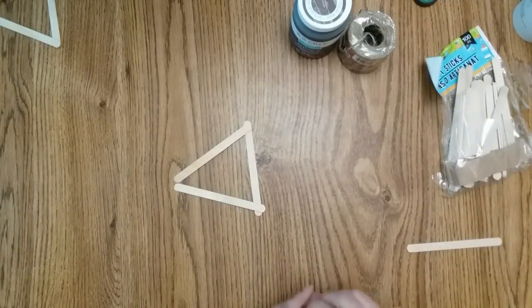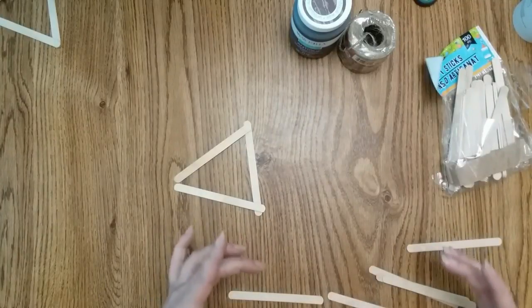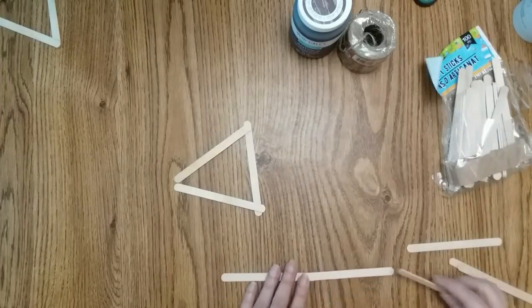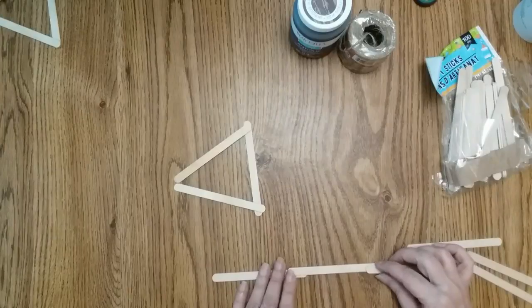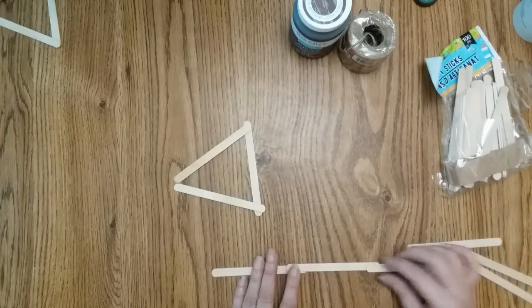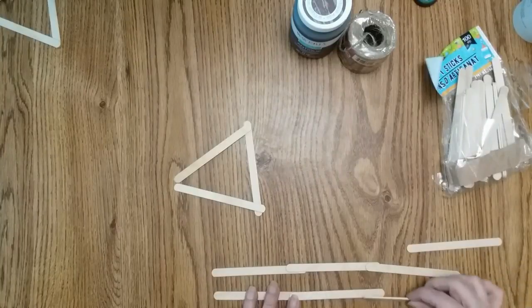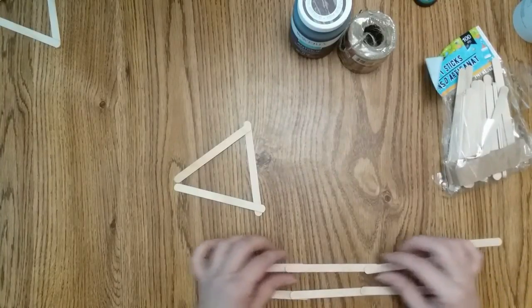Then you want to take, depends on how long you want the arrow shaft. You can make it three popsicle sticks long or two popsicle sticks long. I'm going to make this one three popsicles long. So you want to glue two sets like this. Get them perfectly straight though, mine aren't.